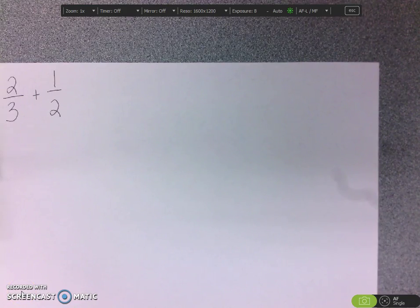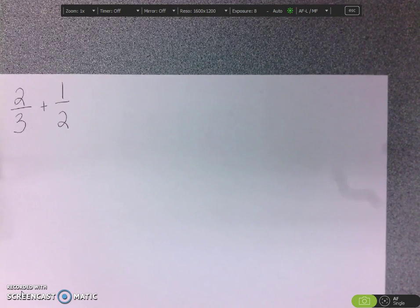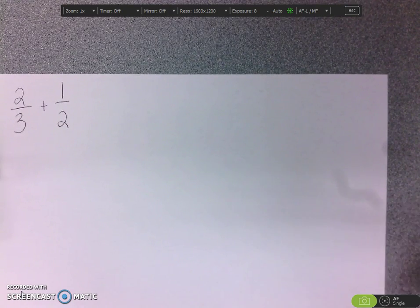Okay, so I got a question today asking for a review video on how to add fractions with unlike denominators.